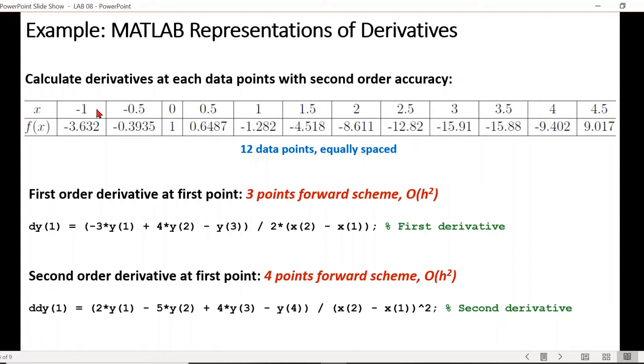If we consider evaluating first derivative at the first point, we require three points to maintain second order accuracy. In MATLAB we can write the formula easily, but make sure how you were defining the variables. Here if we consider dy denotes first derivative, it doesn't matter how you define it, but be careful that the bracket after the parameter means that MATLAB is storing the value in a table where the number designates its position. On the right side we simply write the formula according to the finite difference scheme, where brackets for x and y denote the position of the data point and function values respectively.